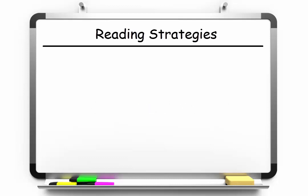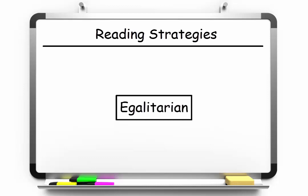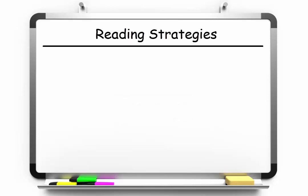What if you saw this word on its own? Egalitarian. Unless you happen to be familiar with the word already, there's no way you could really figure out what it means. But what if you saw this word with some context — that is, with some surrounding information?